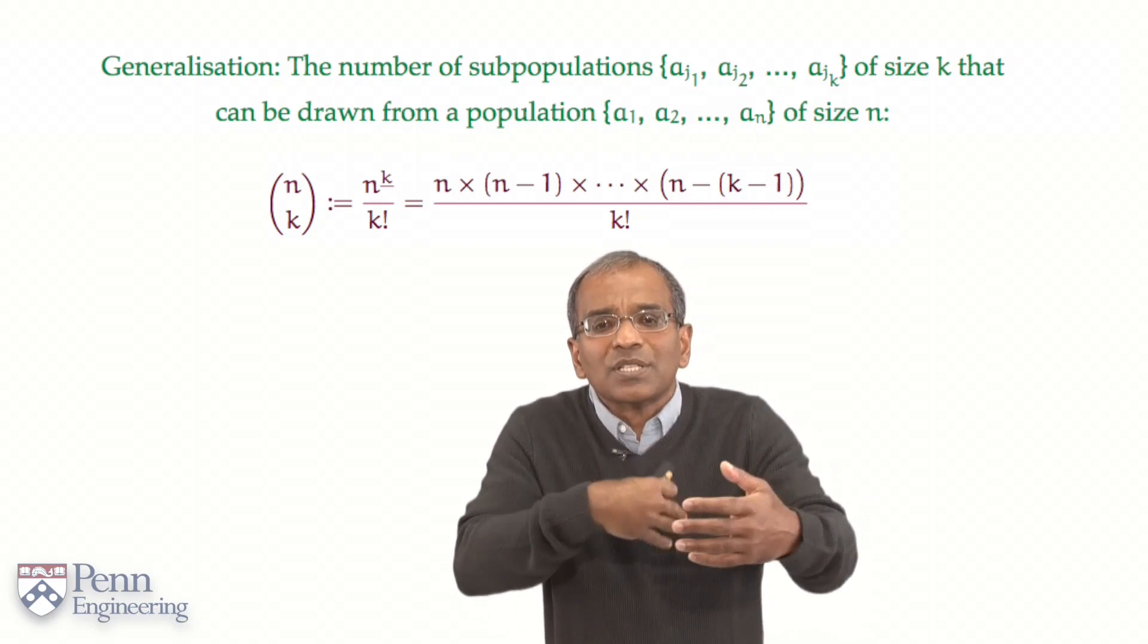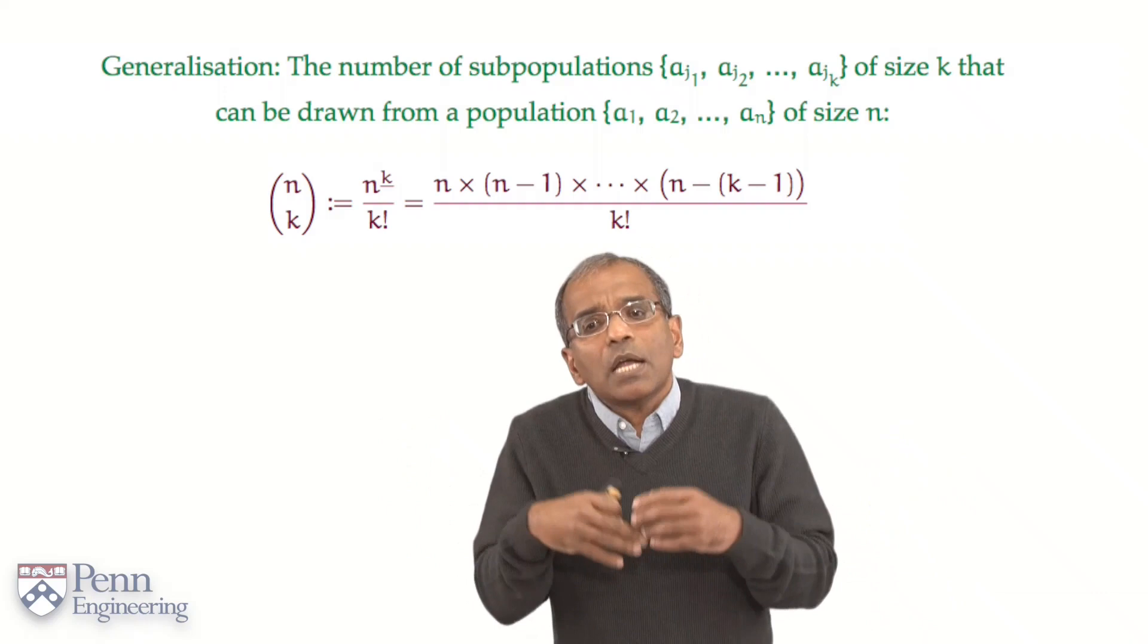But then there is going to be an over-counting because of all these permutations of every particular subpopulation. There are k factorial permutations.